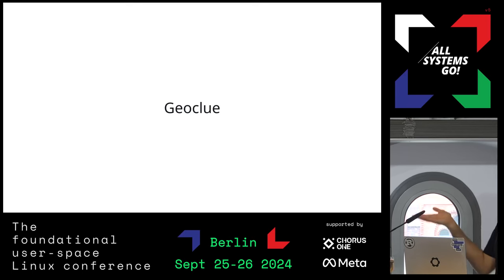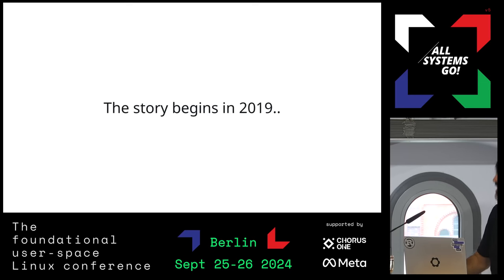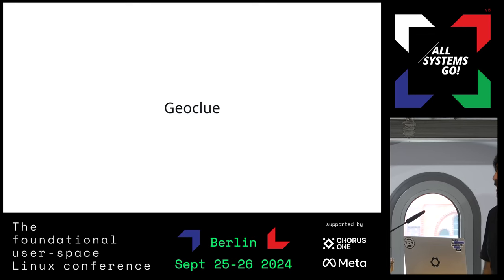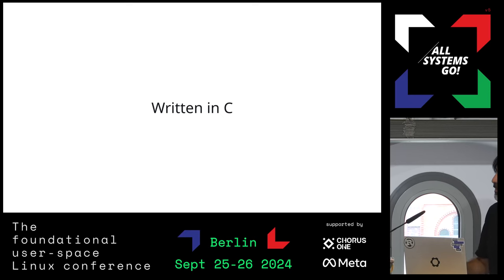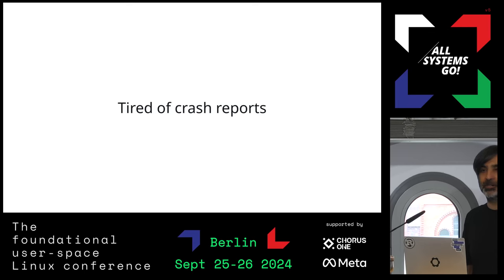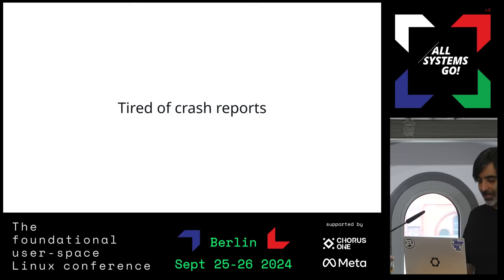The story begins in 2019. I was maintaining a project called GeoClue — it's a device service that, if you have desktop Linux, is probably on your machine right now. Its task is to locate you by any means possible. It was written in C, it's a geolocation service, and I was maintaining it but not really getting paid for it. All the bug reports I was getting were about crashes and segmentation faults, so it wasn't a lot of fun anymore.